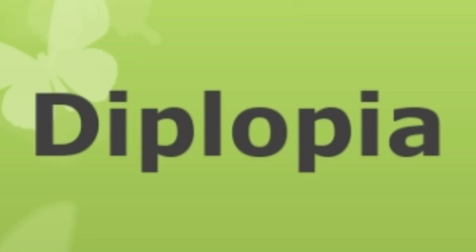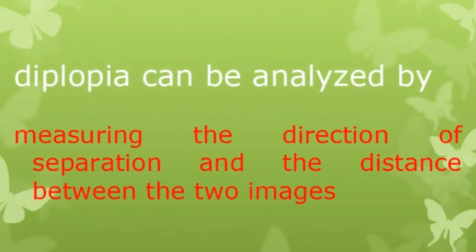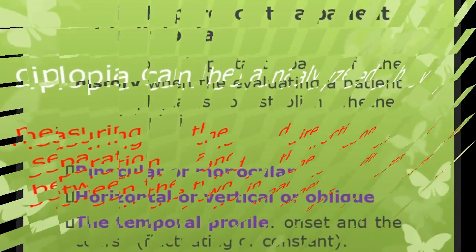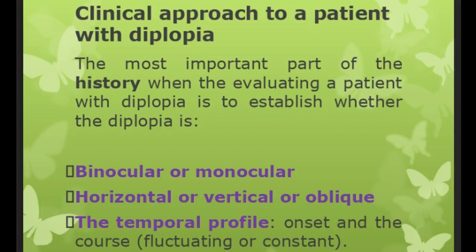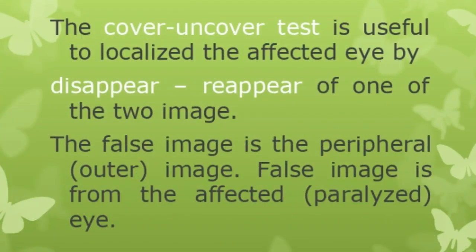Squint and diplopia are features of nuclear and infranuclear lesions. Diplopia can be analyzed by measuring the direction of separation and the distance between the two images. In the clinical approach to a patient with diplopia, the most important part of the history is to establish whether diplopia is binocular, horizontal, vertical, or oblique, and the temporal profile — the onset and course, whether fluctuating or constant. The cover-uncover test is useful to localize the affected eye. The false image is the peripheral outer image and always comes from the affected paralyzed eye.